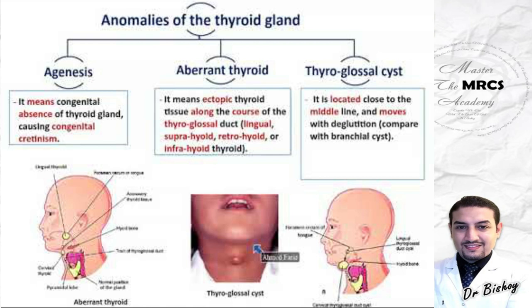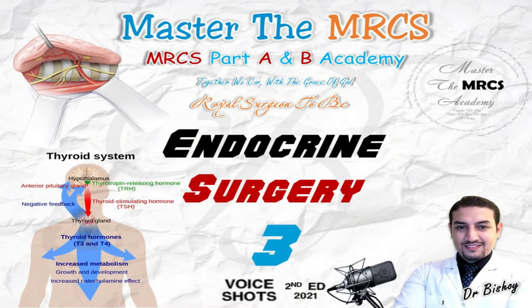Ask the patient to protrude their tongue — if the swelling moves with tongue protrusion, this is a thyroglossal cyst. If it doesn't move with protrusion of the tongue, this is a thyroid gland. This is the key clinical differentiator between a thyroid gland swelling and a thyroglossal cyst.